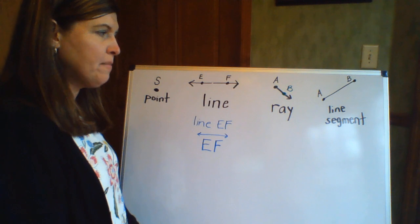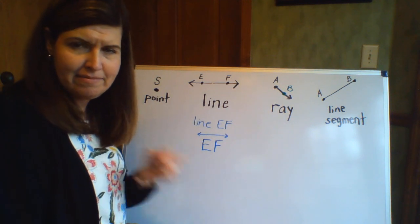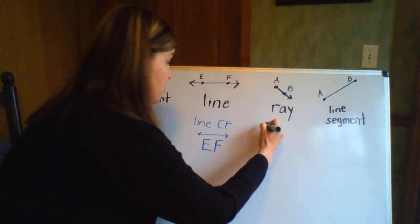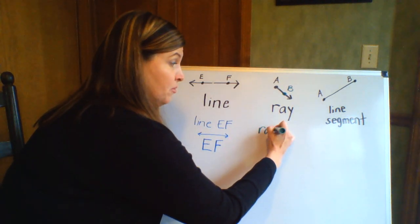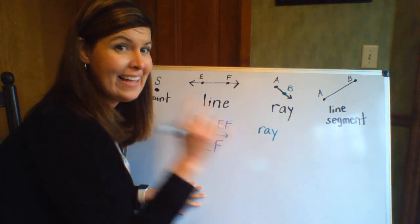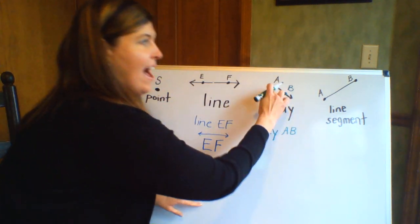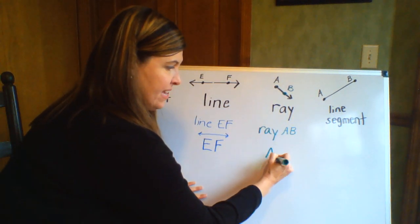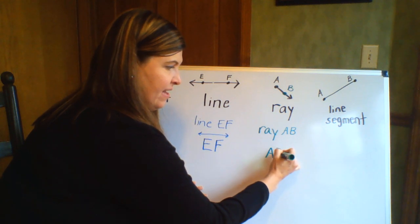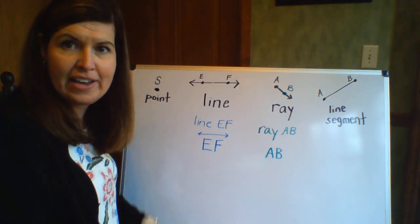Now if I wanted to label that ray, there's two ways I can do it. You want to guess how? You already know. You could either write it as ray AB, or I can pick out my points AB and write the ray symbol on top of it.